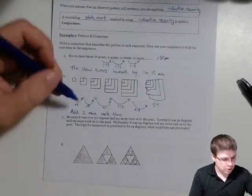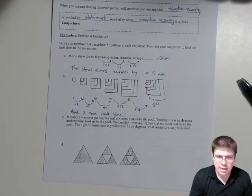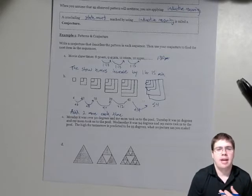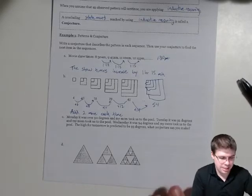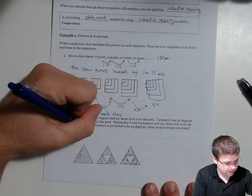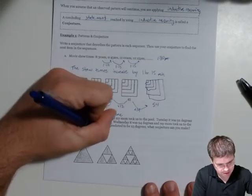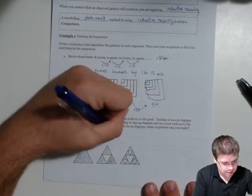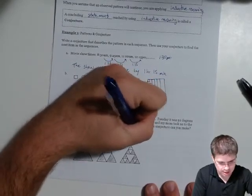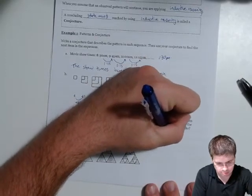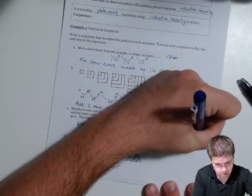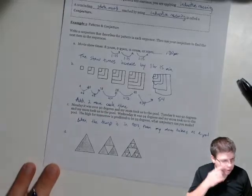This one: Monday it was over 90 degrees and my mom took us to the pool. Tuesday it was 92 degrees and my mom took us to the pool. Wednesday was 94 degrees and my mom took us to the pool. The high for tomorrow is pretty to be 93. What conjecture can we make? Seems like when it's hot, when the temperature is in the 90s, then my mom takes us to the pool. And so that would be our conjecture, is that tomorrow my mom will take us to the pool. Our conjecture is tomorrow we'd go to the pool.